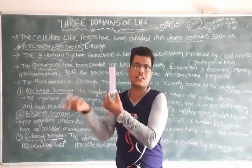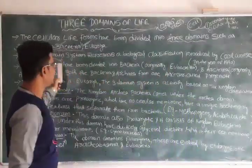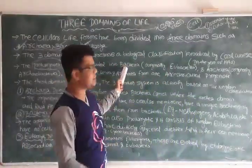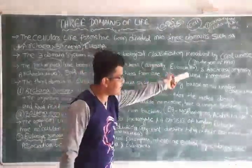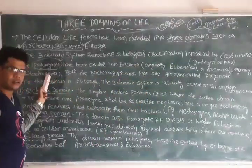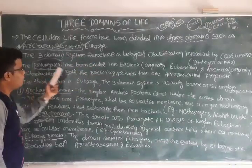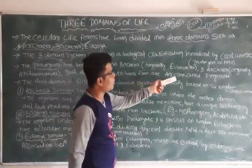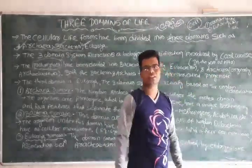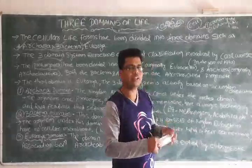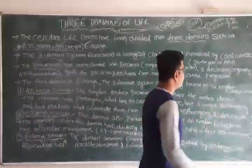Like a father who has two different sons, from one parent two sons are produced. Similarly, the prokaryotes have been divided into two parts: bacteria and Archaea. Both bacteria and Archaea come from one ancestor, and since Archaea are also called Archaebacteria, they are referred to as progenies from the same ancestor.